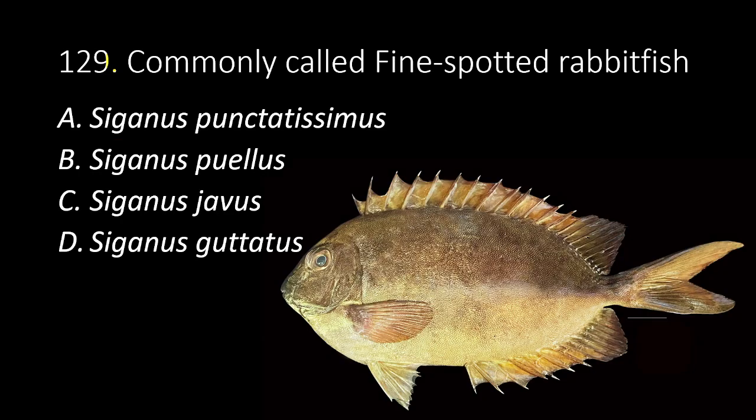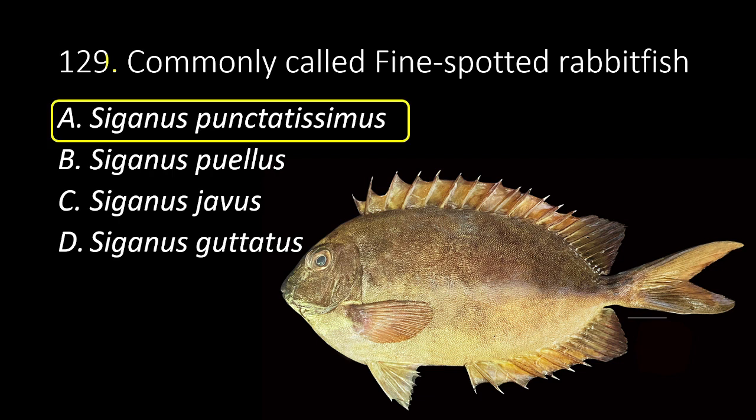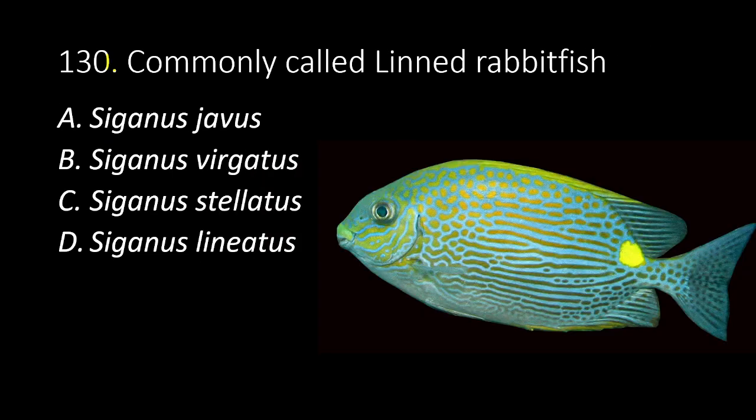129. Commonly called fine-spotted rabbit fish. A. Siganus punctatissimus. B. Siganus puellus. C. Siganus javus. D. Siganus guttatus. The answer is A, Siganus punctatissimus.